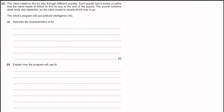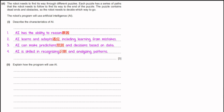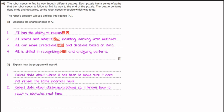The robot uses AI to navigate puzzles with dead ends and obstacles. Characteristics of AI include: the ability to reason, learn and adapt including learning from mistakes, make predictions and decisions based on data, and recognize and analyze patterns. The program uses AI by: collecting data on where it has been to avoid repeating incorrect routes, collecting data about obstacles so it knows how to react next time, and storing successful and unsuccessful actions so it knows what is most likely to work.